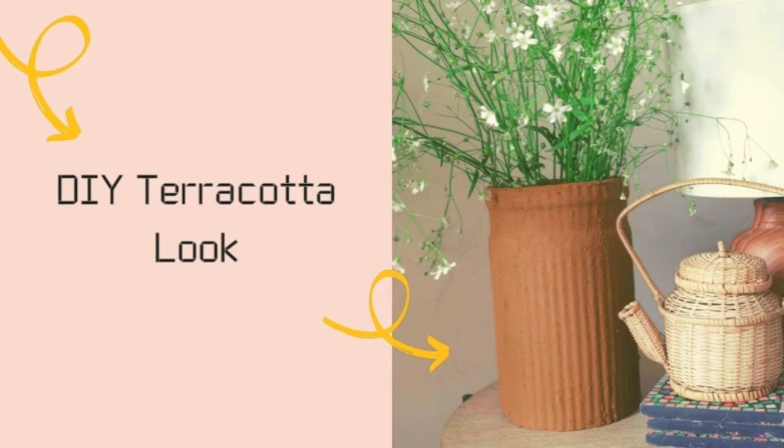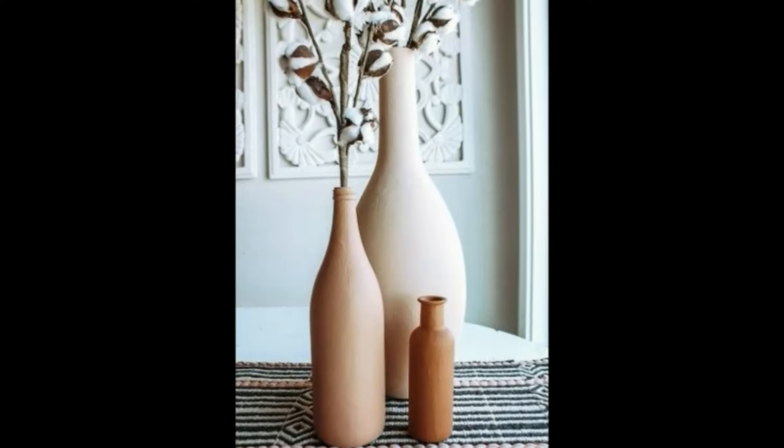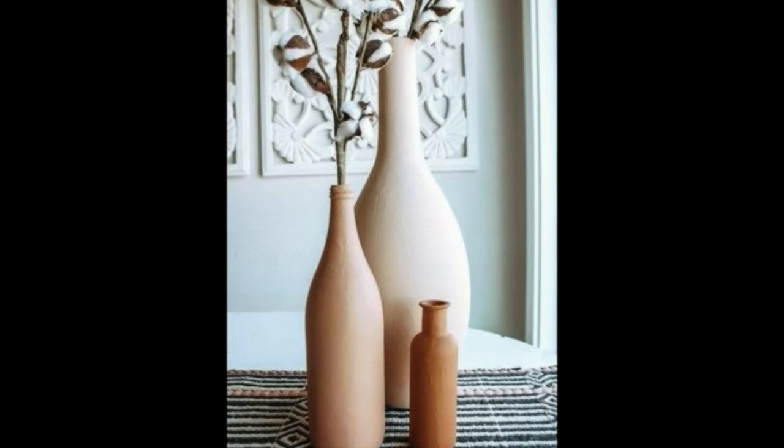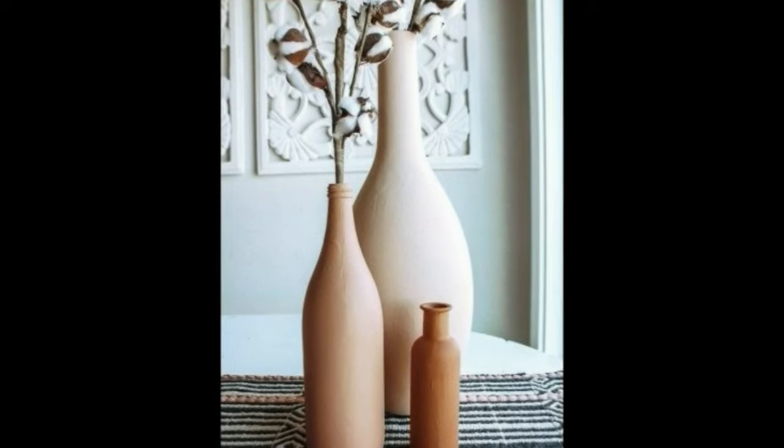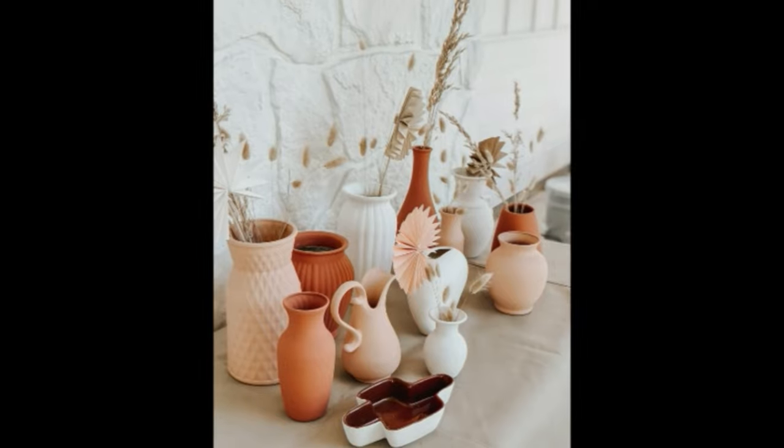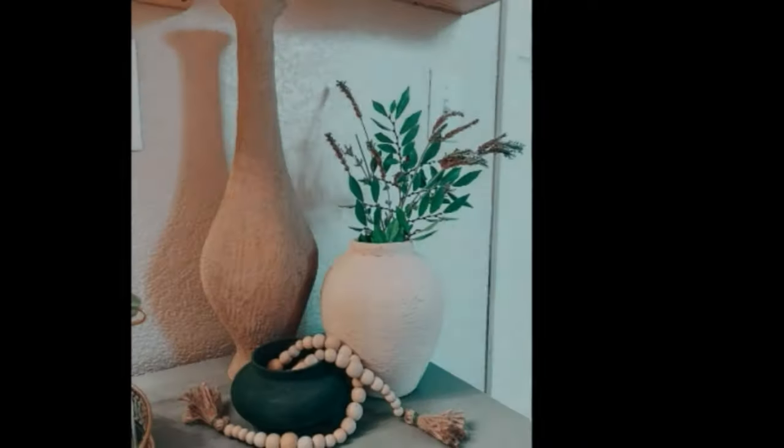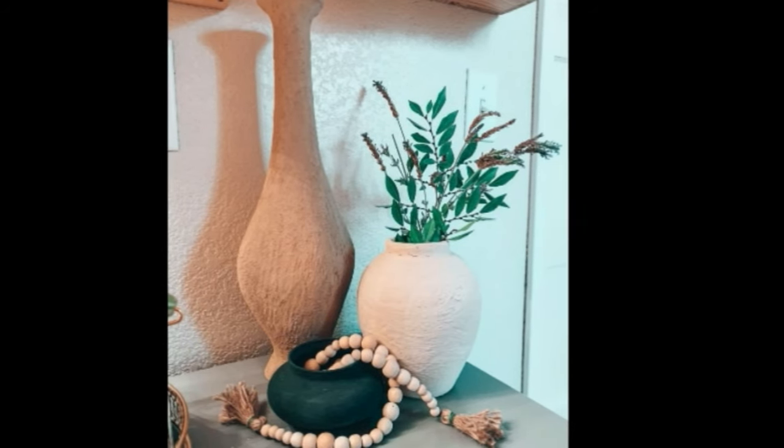Now moving on to our second DIY, which is DIY terracotta look. This is literally the most viral DIY on Pinterest last year and this year as well. I have literally seen thousands of videos doing this DIY look, so we are also going to do it. This is a very simple and unique way of giving a textured terracotta look to any of your old ceramic or glass bottles, vases, or bowls. Anything you can go ahead with.